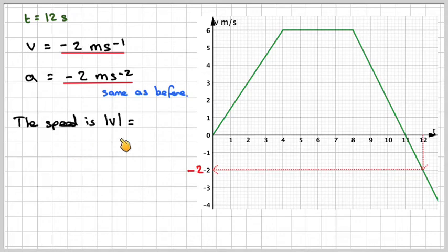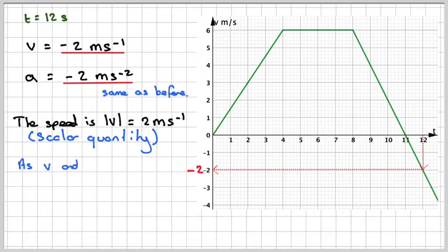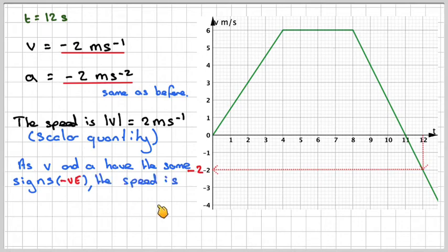Therefore, the speed is going to be the absolute value of minus 2, so that will be just 2 meters per second. Remember, speed is a scalar quantity, but it's always going to be positive. Now, because both of these have the same sign, i.e. both negative, so as V and A have the same sign, i.e. negative, the speed is increasing. Though it seems strange, but that's actually what happens.